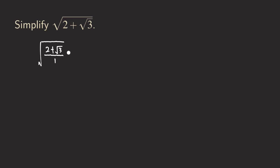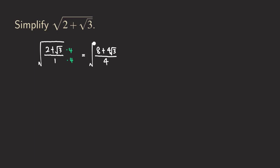Now what I want to do is multiply the top and the bottom by four — but that four is inside this other radical here. So we are going to get the square root of: two times four is eight, and then radical three times four gives us four radical three. And then all over four at the bottom.